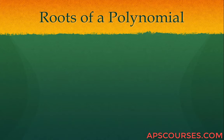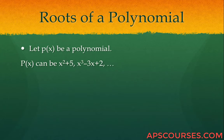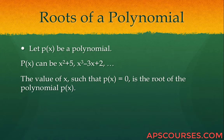Let us start with the first topic: roots of a polynomial. Let P of x be a polynomial — it can be x squared plus 5, or x cubed minus 3x plus 2, and so on. The value of x at which P of x is equal to 0 is called the root of the polynomial.